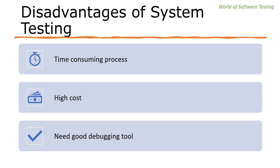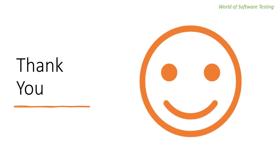Now for the disadvantages of system testing. First, it is a time-consuming process — more so than all other testing techniques, since it checks the entire product or software. Second, the cost of testing is high since it covers testing of the entire software. Third, it requires a good debugging tool; otherwise, hidden errors will not be found and may get leaked to the production environment.